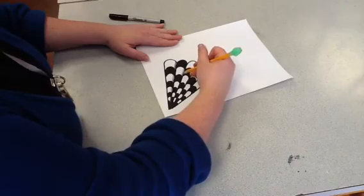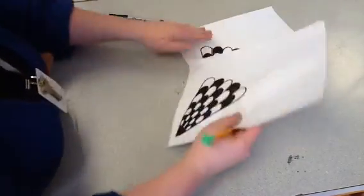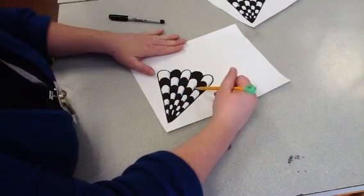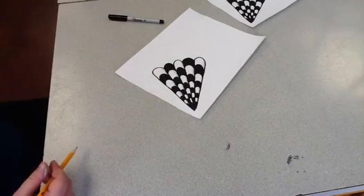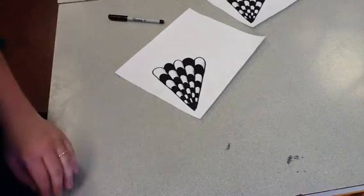And then after I shade those all in, we have a completed picture. The shading on this one is a little bit light. I could darken that up a bit. That's how you make what I like to call kind of a parachute type of design. It reminds me of a parachute.